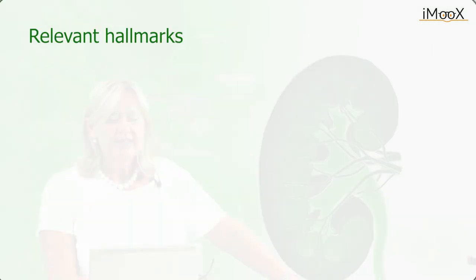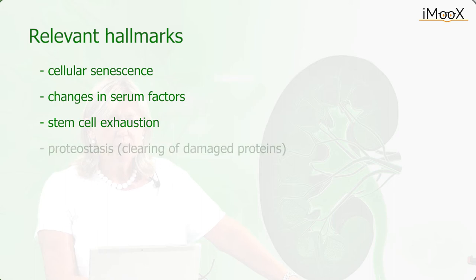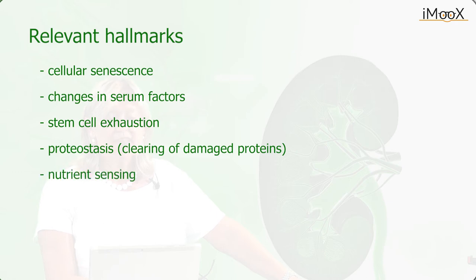Biologists studying the ageing process on a cellular level and in animal models have made some hallmark observations associated with the ageing phenotype. The most relevant hallmark processes on a cellular level are: cellular senescence, changes in serum factors, stem cell exhaustion, proteostasis and clearing of damaged proteins, nutrient sensing — meaning cellular response to nutrients — and mitochondrial dysfunction for energy homeostasis in general.